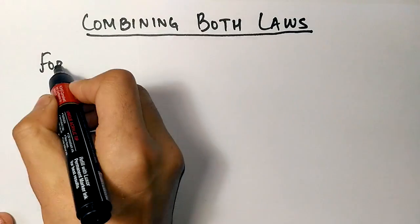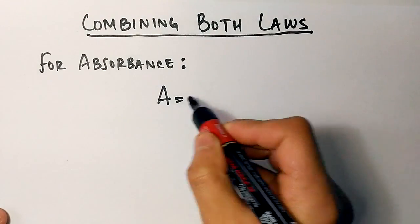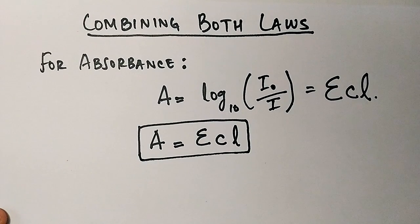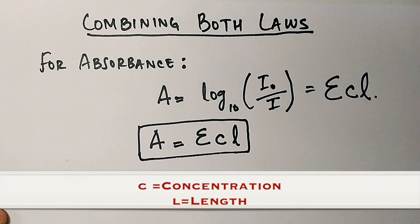Combining both the laws for absorbance, we get A equal to log of I₀ by I, which is equal to epsilon CL, or simply absorbance equals epsilon CL, where C is the concentration of solution in which the light travels and L is the length of solution in which the light travels. So we get here the Beer-Lambert law.